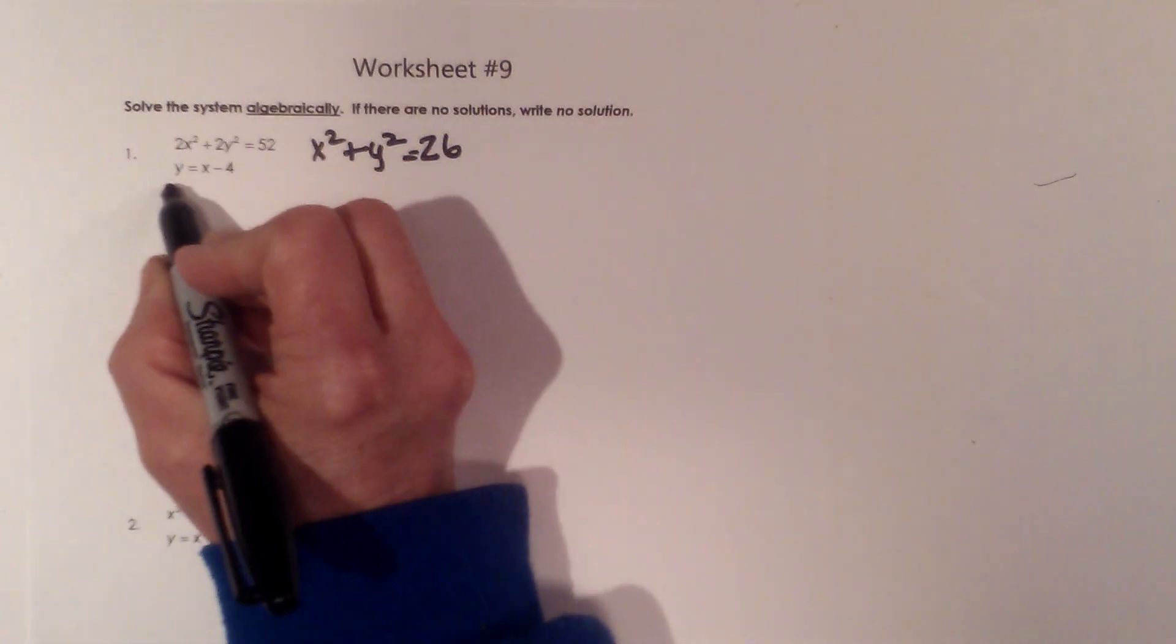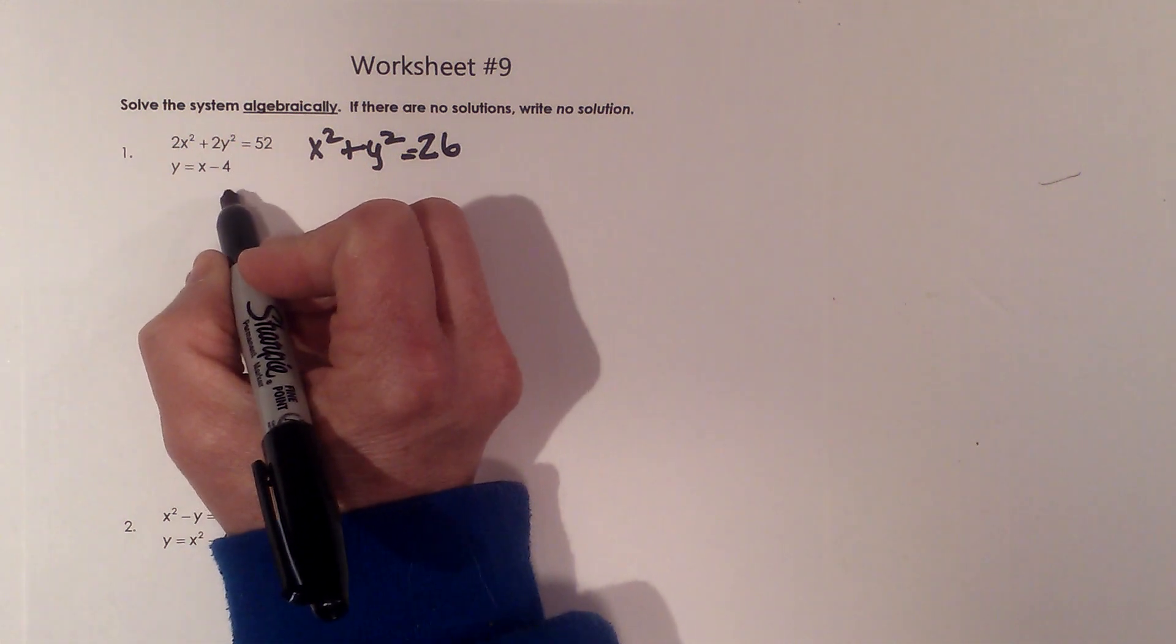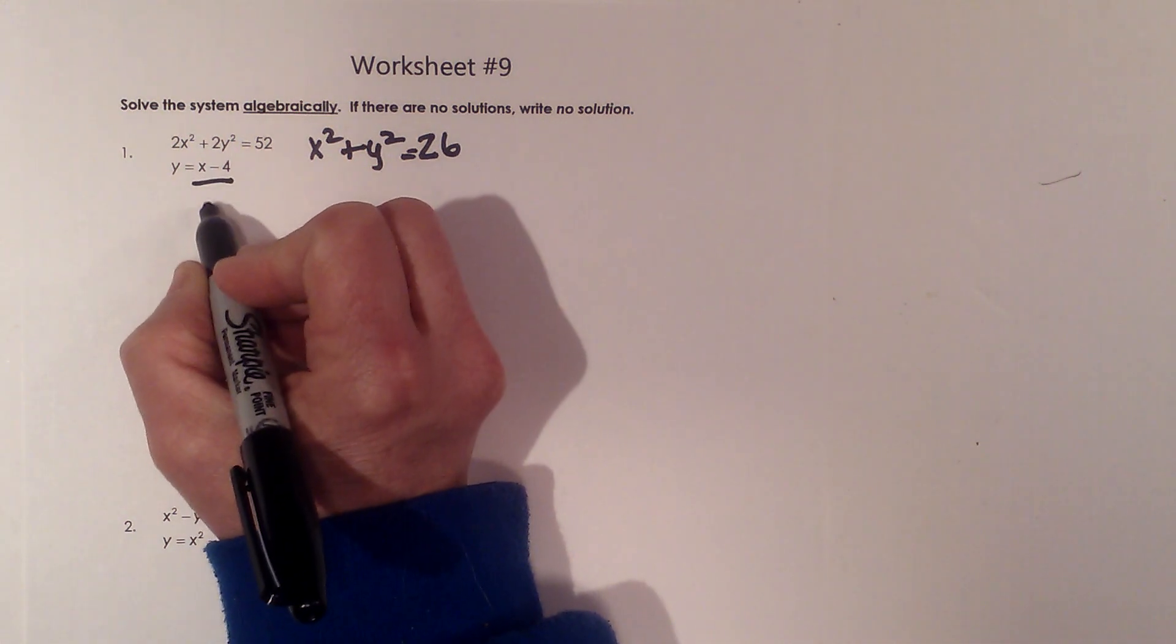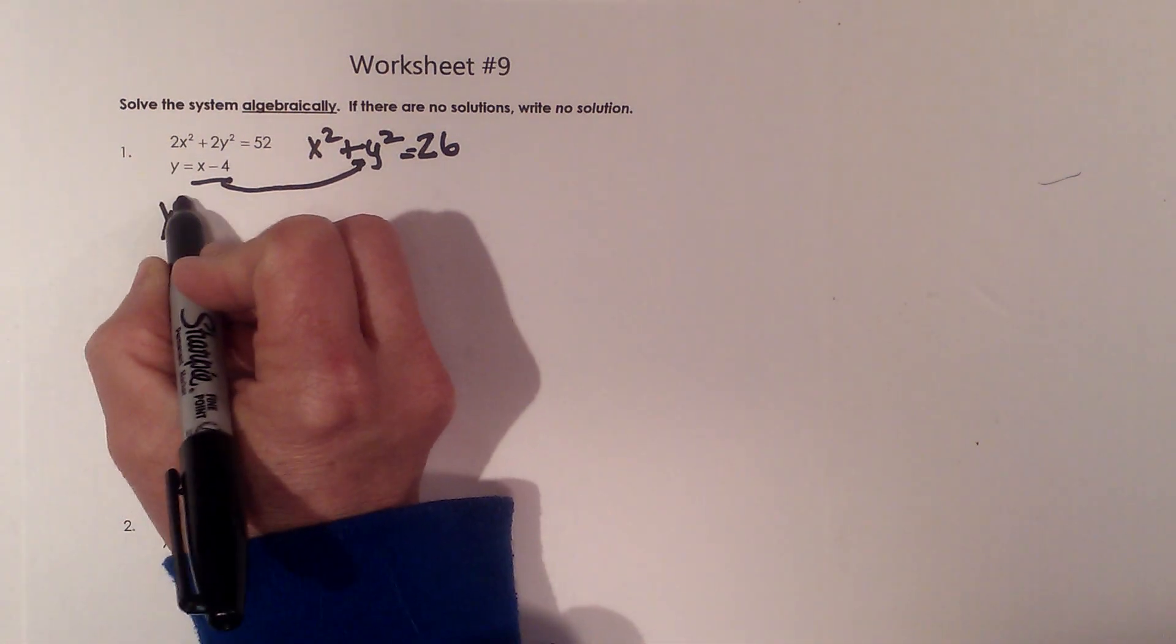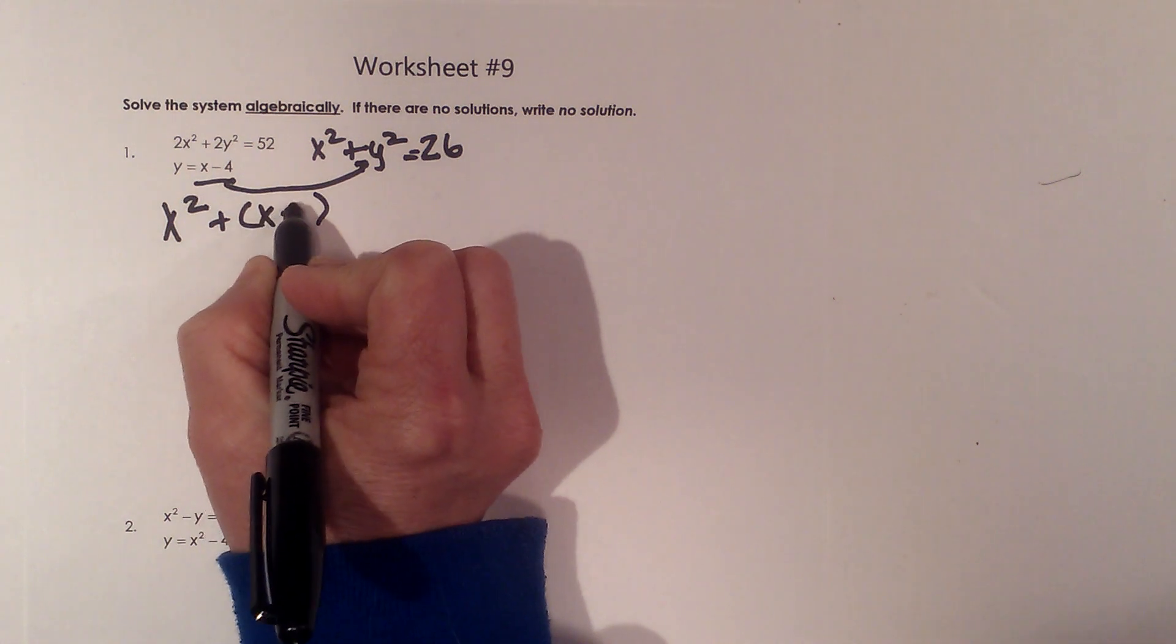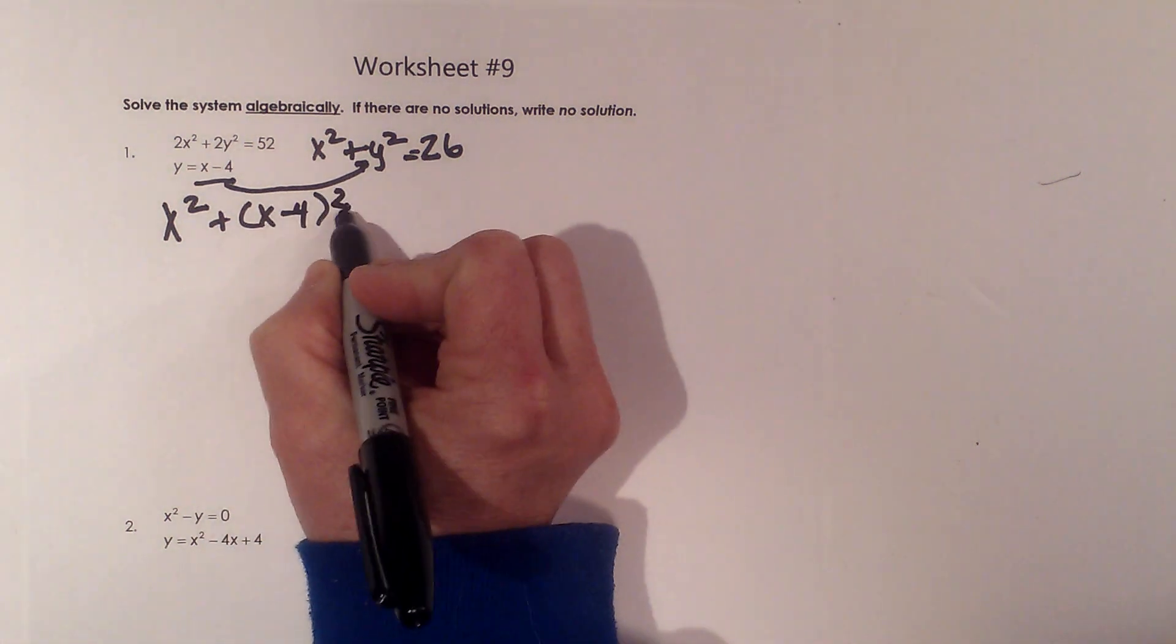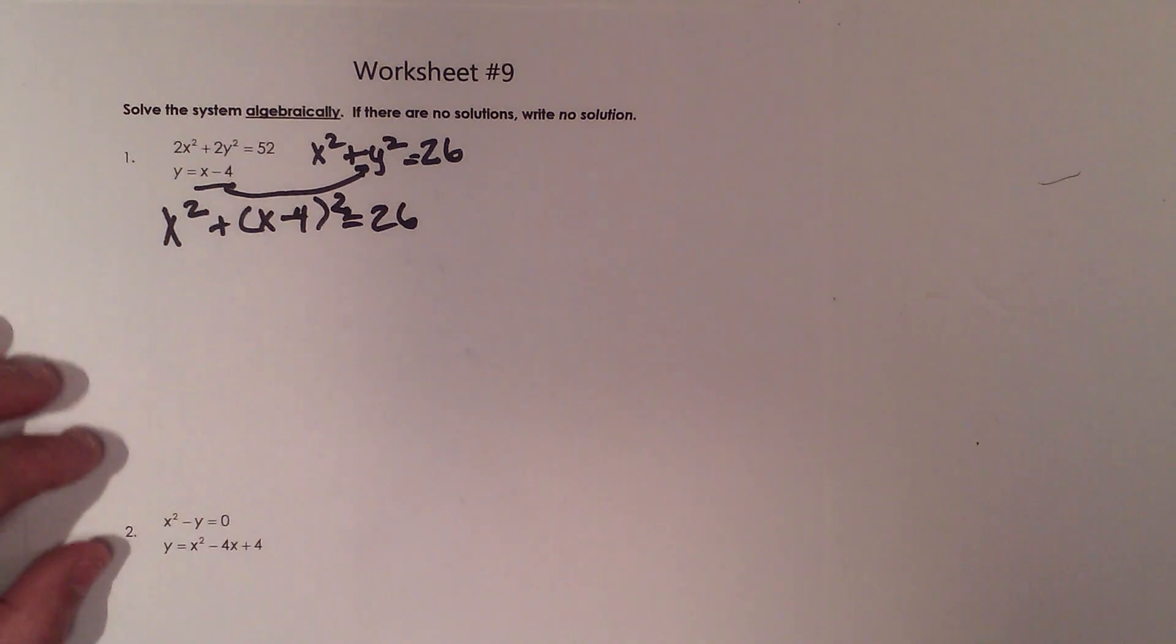My second equation is my linear function. Notice this is already solved for y. So I'm going to substitute x - 4 in for y. So I have x² + (x - 4)² = 26. Now I'm down to one variable. Now I can solve it.